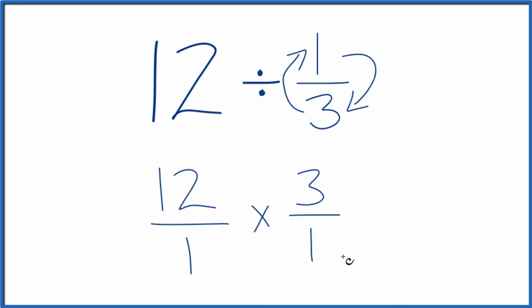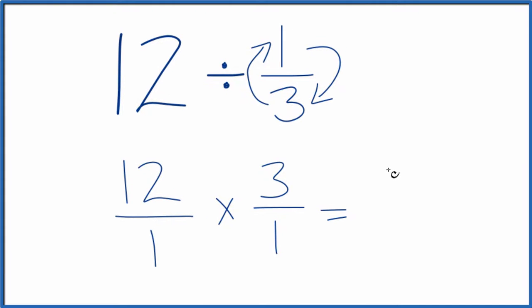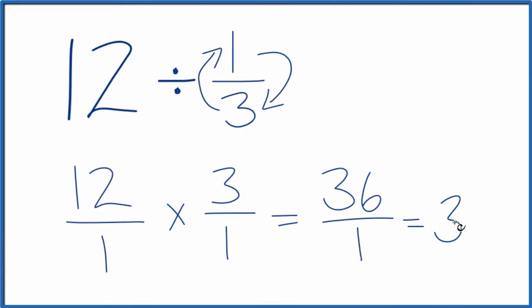Now, since we're multiplying fractions, we're going to multiply the numerators, then the denominators. That gives us our answer. 12 times 3 is 36, and 1 times 1 is 1. 36 over 1, that's just 36.